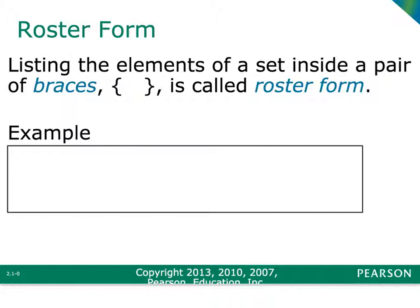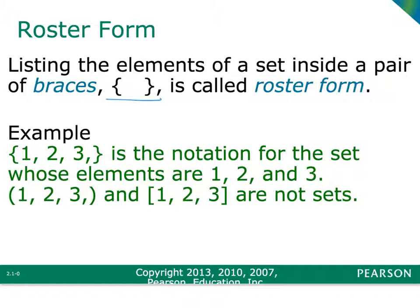One other way that you could write a set is by using what's called roster form. In roster form, you're going to write the elements in braces — some people call them braces, some people call them curly brackets. All you do is list all the elements that are in the set in the braces. So for example, if your set is 1, 2, 3, and you've listed 1, 2, 3 in the braces, that is roster form. Be careful because you do have to use the curly brackets. If you use parentheses or square brackets, those are not going to be considered sets, and MyMathLab will mark those answers as wrong.